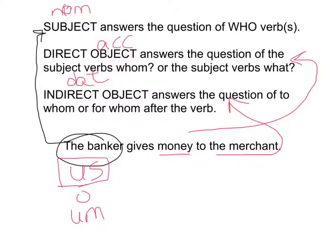The next word is money. That is, as we said before, the direct object, which is in the accusative case. So, we need the accusative ending for money.